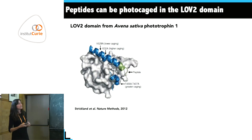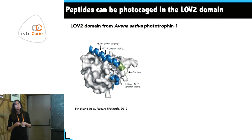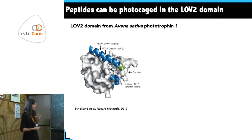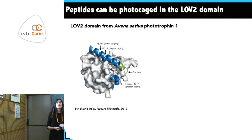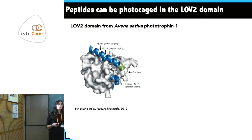This is the paper that inspired our work, published in 2012 in Nature Methods. The tool is called TULIPS. They were the first to show that if you take the J-alpha helix, truncate it while still preserving helix structure, and append a short peptide at the end, the peptide is photocaged in the dark state.